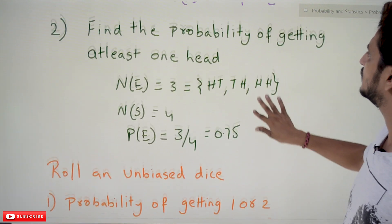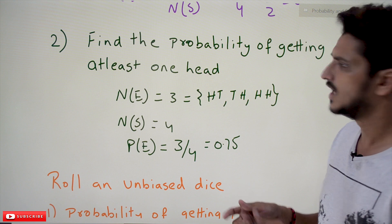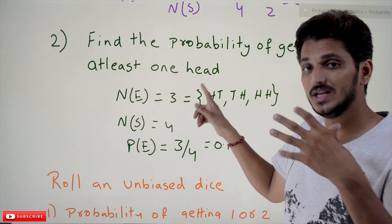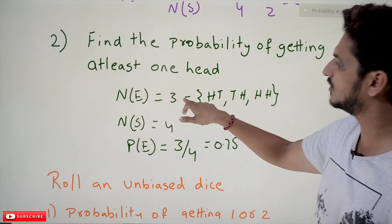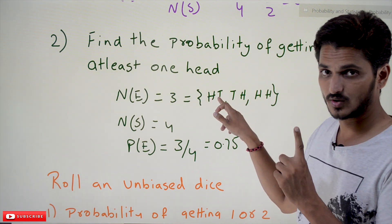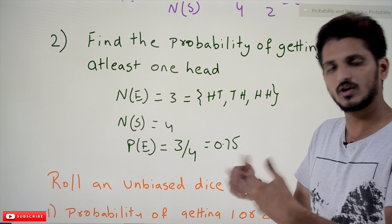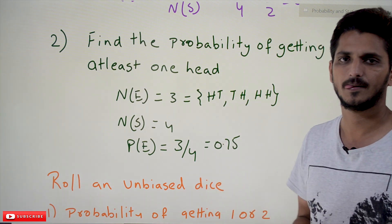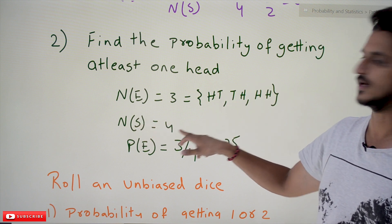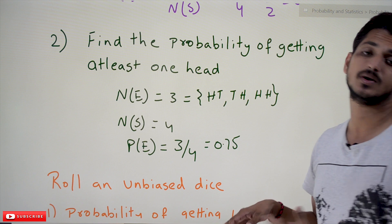Now the next example: find the probability of getting at least one head for the same experiment — tossing two coins. At least one head means: Head-Tail (at least one head), Tail-Head (at least one head), and Head-Head (more than one head, which is also accepted). So event E has three elements. N(S) = 4. Probability of event E = 3/4 = 0.75, meaning 75% chance of obtaining any one of these possibilities.